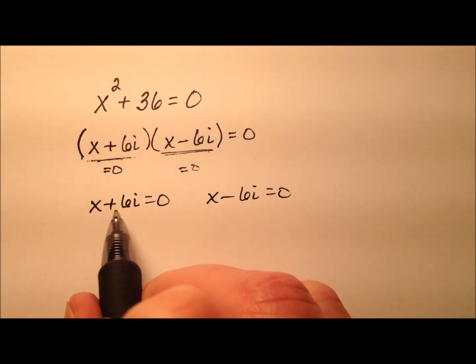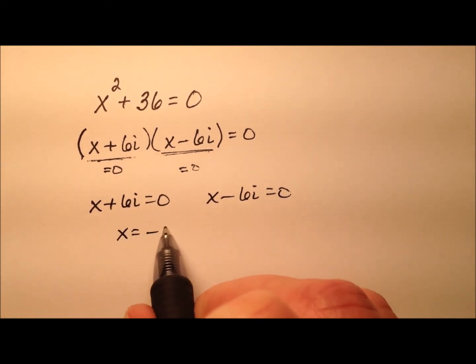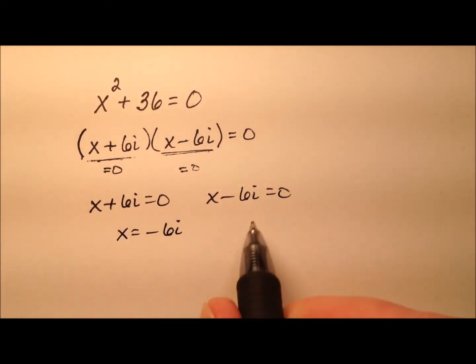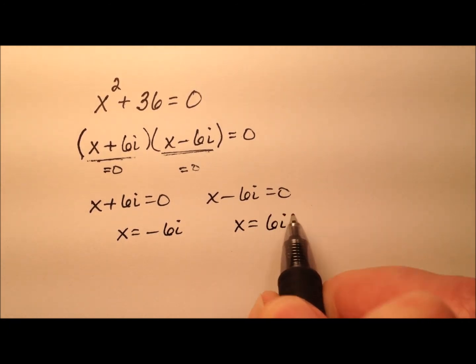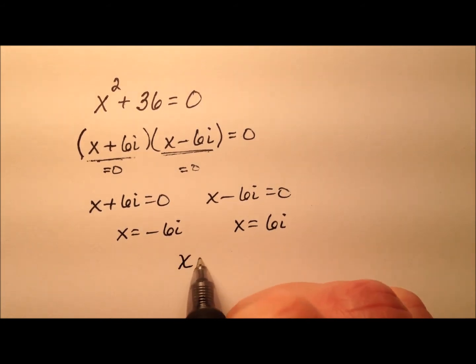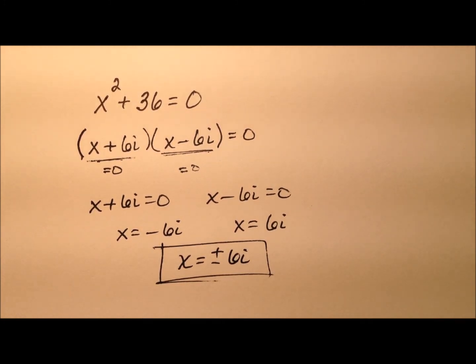In this case, when I subtract 6i from both sides, x equals negative 6i. And in this case, when I add 6i to both sides, x equals positive 6i. So I can put both solutions together and say x equals plus or minus 6i, and I solved that equation by factoring.